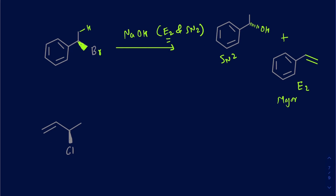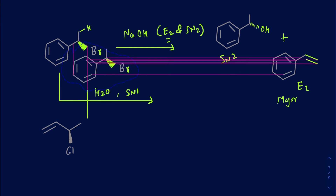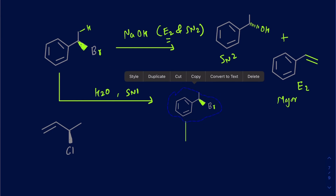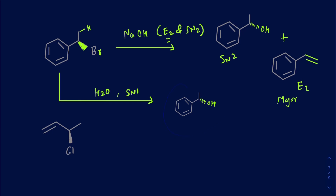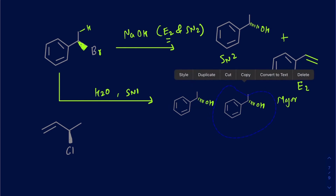So if I want just an alcohol product — just a substitution product — I would rather use water. But when I use water, it's going to do an SN1 mechanism, and when it does SN1, you will get a mixture of enantiomers: I can have the OH going back into the page and also have the OH coming out of the page. So you get a pair of enantiomers.